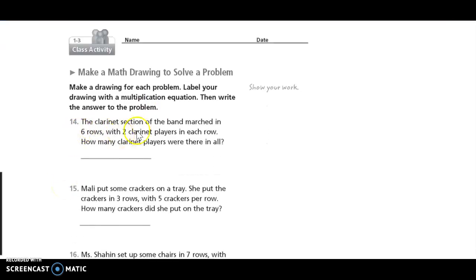Number 14. The clarinet section of the band marched in six rows with two clarinet players in each row. How many clarinet players were there in all? So first, they want us to tell how many clarinet players there were in all. This is the question that we're trying to answer. Since it says in all, we know we're multiplying.